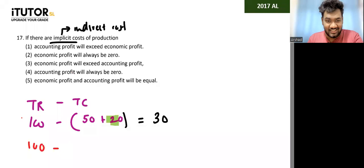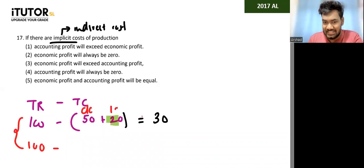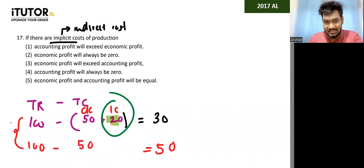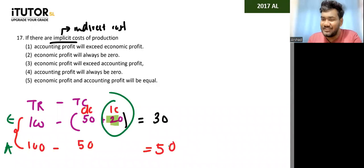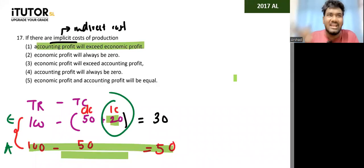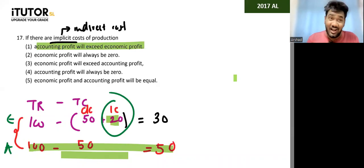So when there is an indirect cost, whose profit is higher — the economist's or the accountant's? The economist's profit was 30 and the accountant's profit was 50, so the accountant had the higher profit. Therefore the answer is number one: accounting profit will exceed economic profit, because the accountant only deducts direct cost. The economist deducts both direct and indirect cost, so his profit is lower. The accountant only deducts direct cost so his profit is higher.